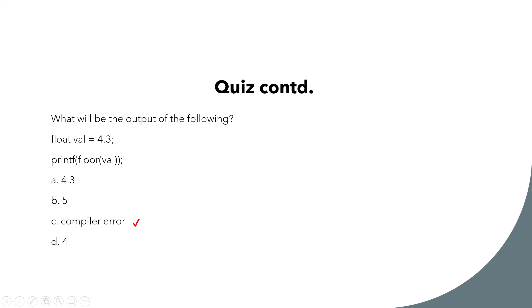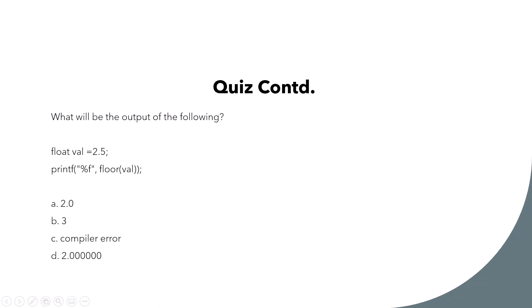What will be the output of this one? Float val equal to 2.5, printf with format specifier then floor of val. Here we do have the format specifier, so it will print 2.000000. Remember, floor always rounds down.